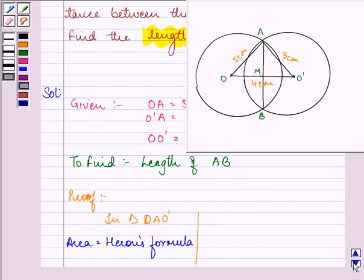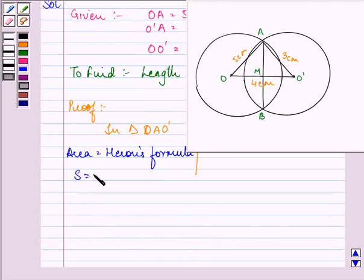Let us first find out S, that is the semi-perimeter of the triangle divided by 2. The answer comes out to be 12 by 2, that is further equal to 6 cm.